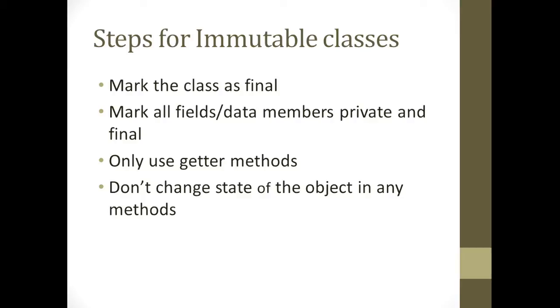Now, here I have the steps for creating an immutable class. The first thing you want to do is mark the class as final. When you mark a class as final, that means that that class cannot be inherited from. Another thing you want to do is mark all fields or data members as private final. So, when you mark a data member as final, that means you're marking the field as unchangeable.